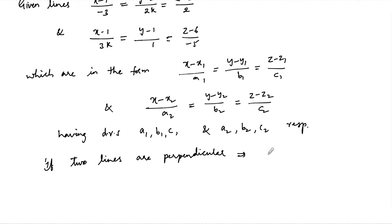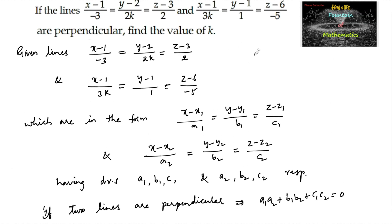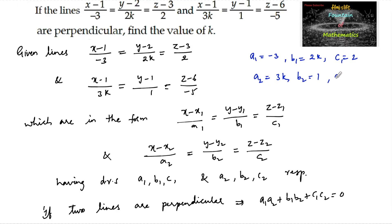we have the condition: a1·a2 + b1·b2 + c1·c2 = 0. Therefore, from the given lines, we identify: a1 = -3, b1 = 2k, c1 = 2 for the first line, and a2 = 3k, b2 = 1, c2 = -5 for the second line.